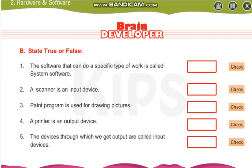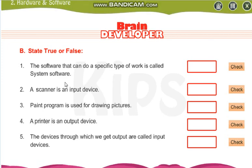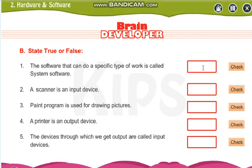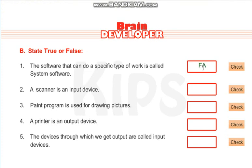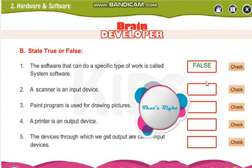Now we will move to true and false. The software that can do a specific type of work is called system software — is that true or false? System software does specific type of work? No, it's false. Let us check. Right.